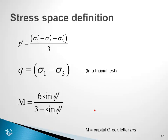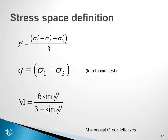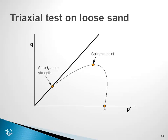In this stress space, the mean effective stress is simply sigma 1 prime plus sigma 2 prime plus sigma 3 prime, divided by 3, and that gives us the mean stress. In a triaxial test, the deviatoric stress Q is sigma 1 minus sigma 3. We can relate the slope of the critical state line to the effective friction angle phi prime with this relationship. M is the Greek letter Mu — not a capital M, but the Greek letter Mu.